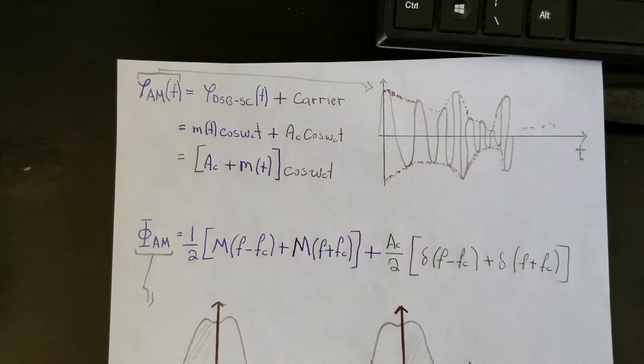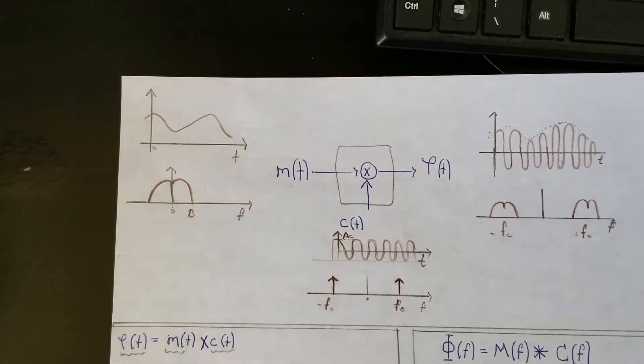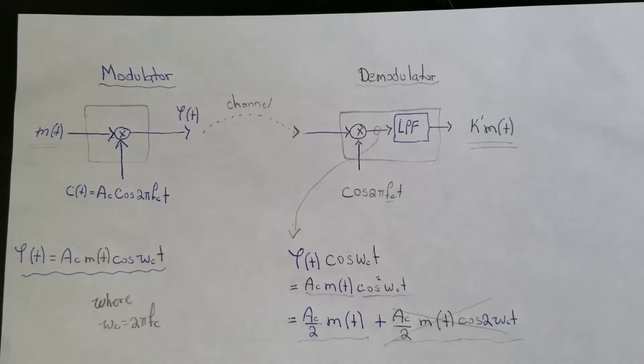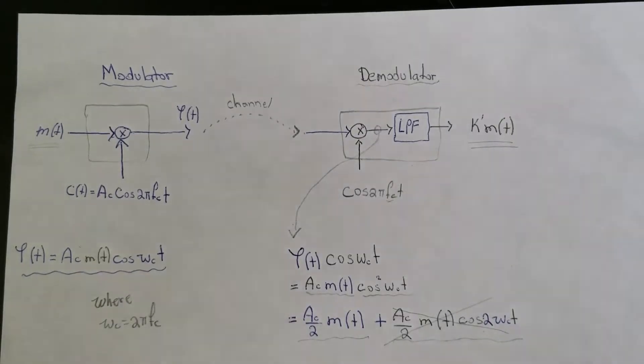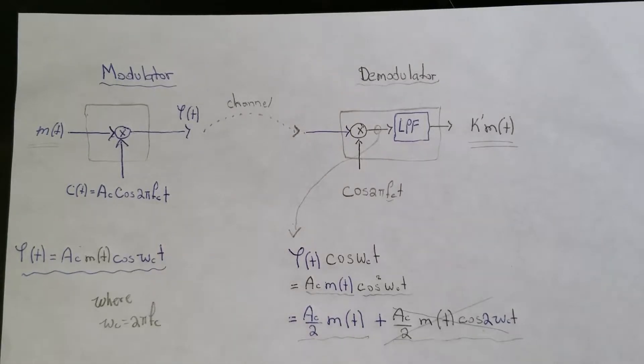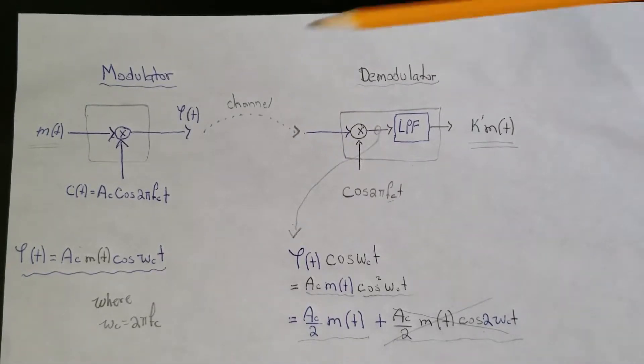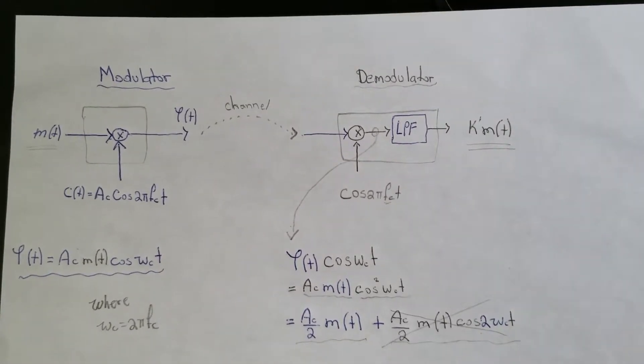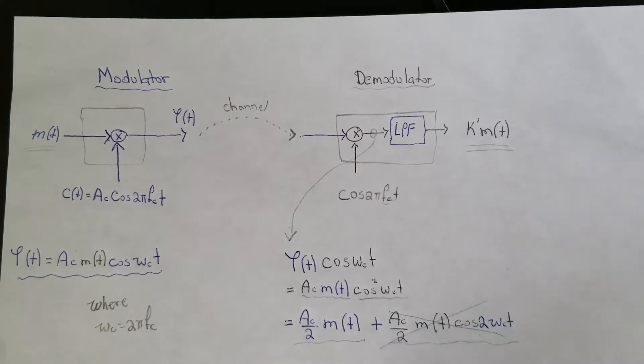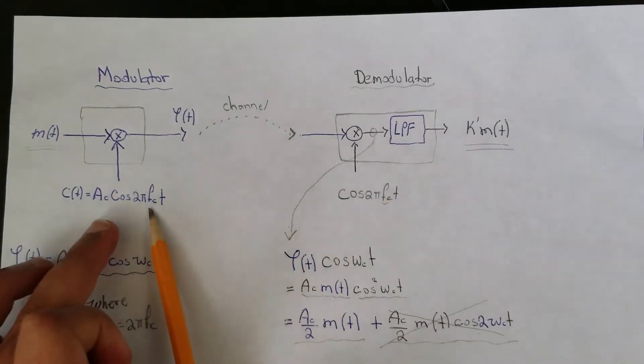However, unfortunately there are limitations to the envelope detection technique. These limitations pertain to the amplitude and symmetry of the signal. This raises the need for a demodulation scheme that can extract the frequency from the demodulator signal and also be able to keep up with the frequency should any changes occur.